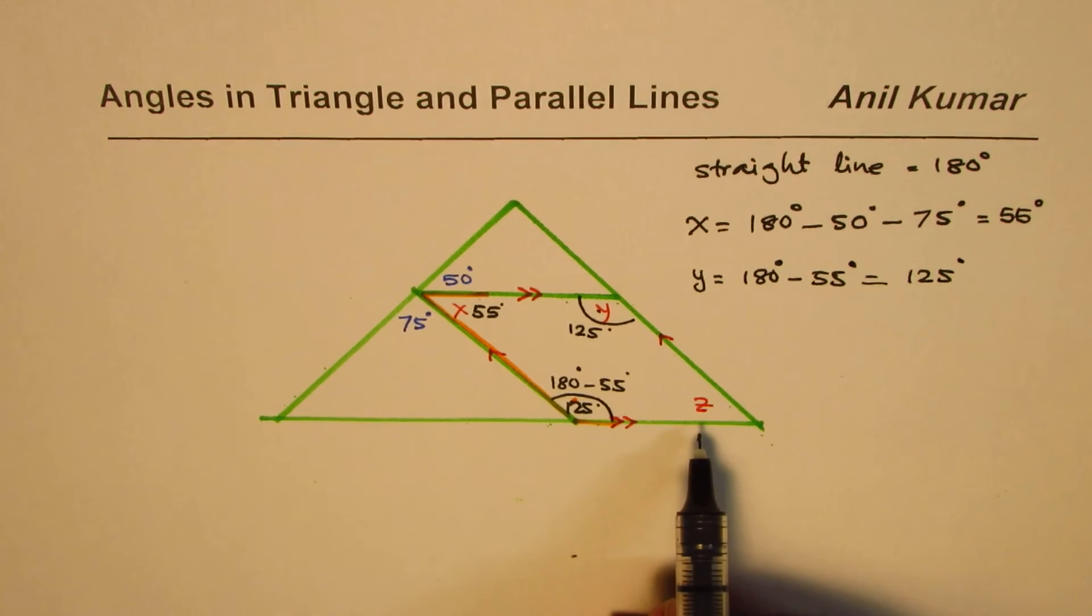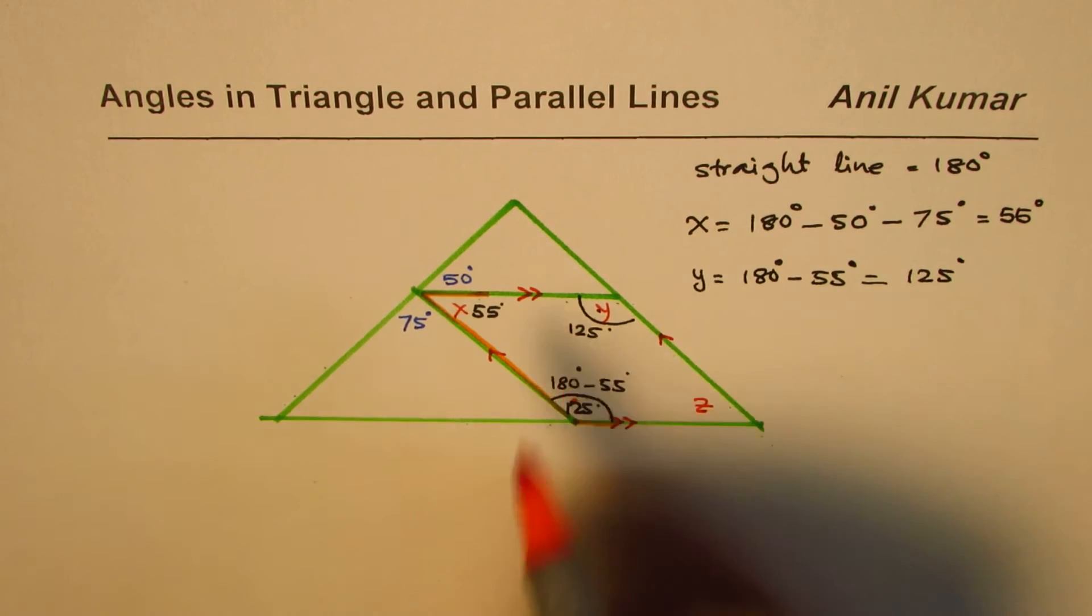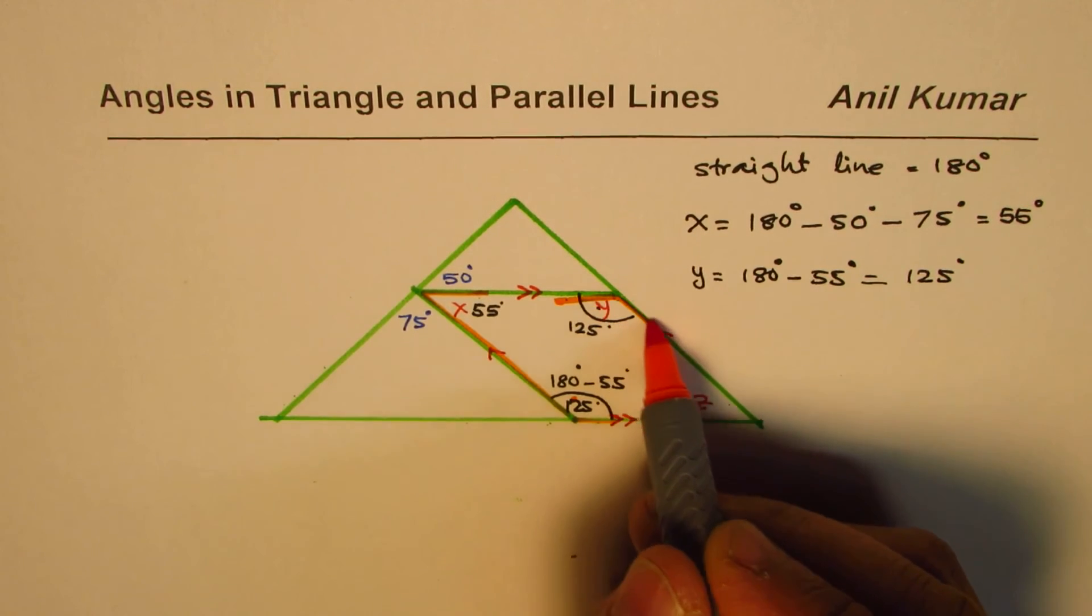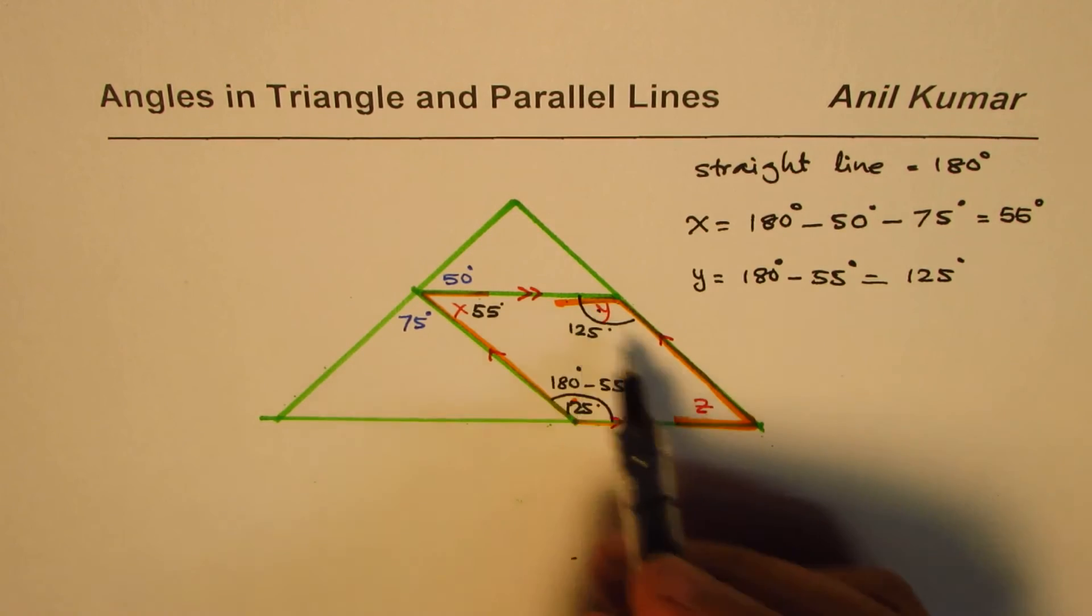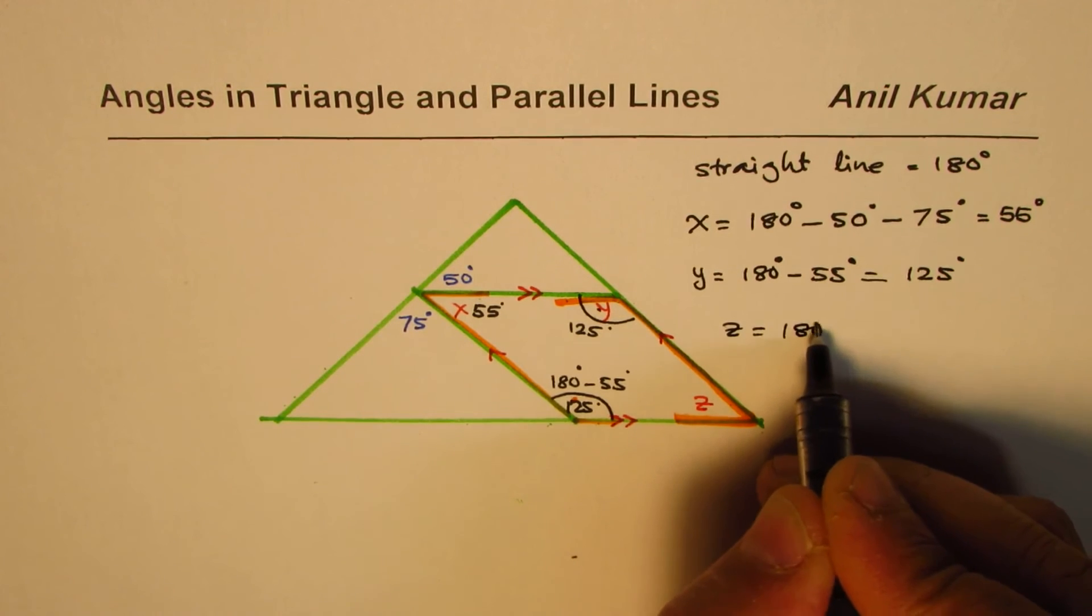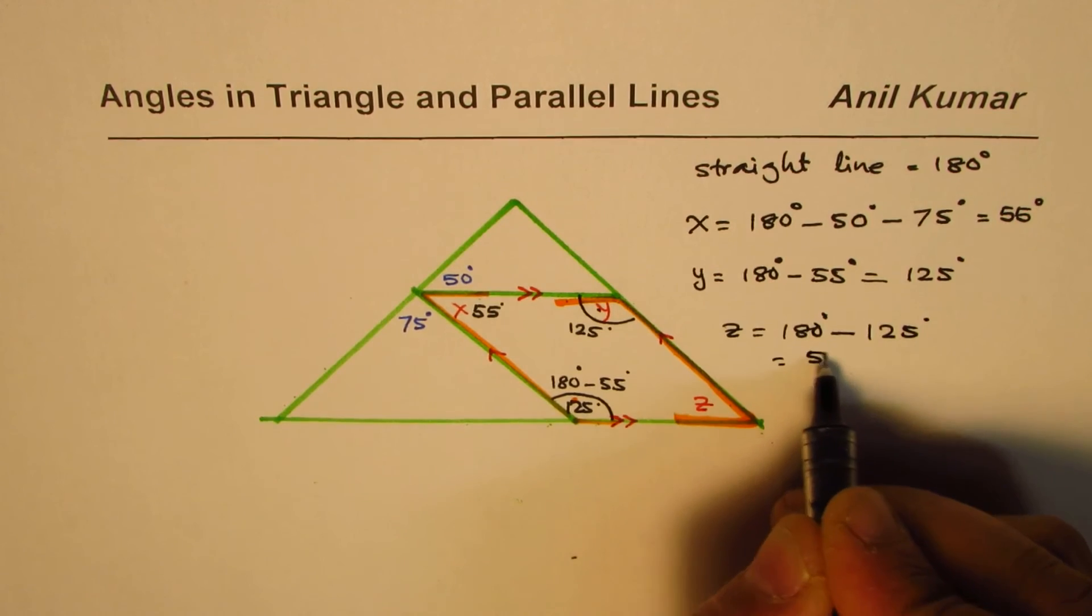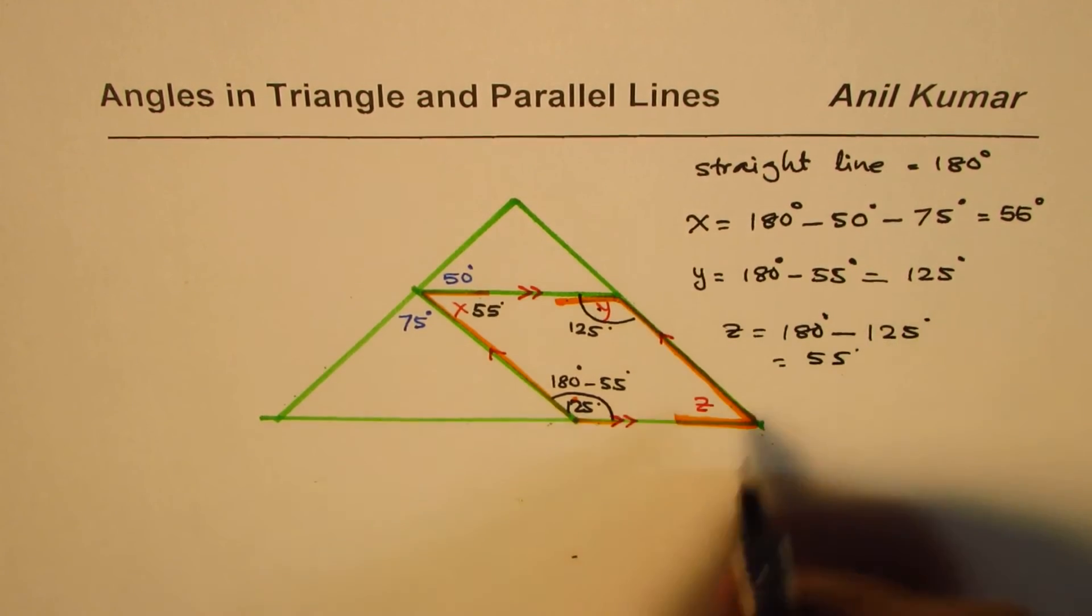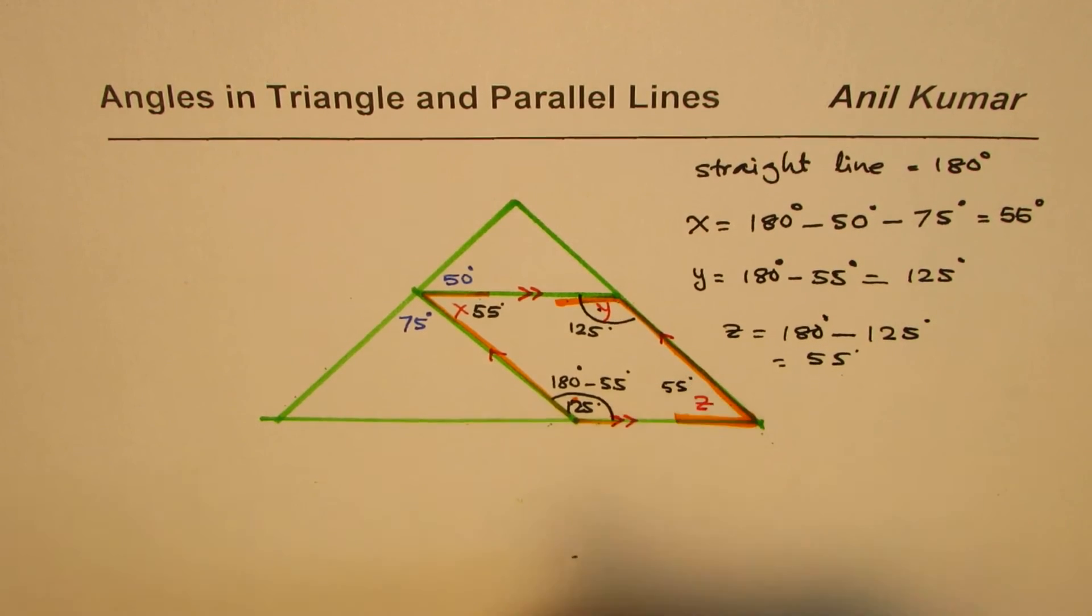Now, we are left with z. Now, for z, again we have this C section. Do you see that C section? So that is another C which we can see, which is this time on this side. So here, the sum of y and z should be 180 and therefore z is equals to 180 degrees minus 125 degrees and that should be 55 degrees. So that is how you can find all your angles. So this becomes 55 degrees.